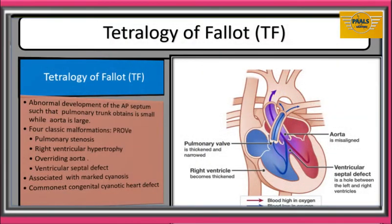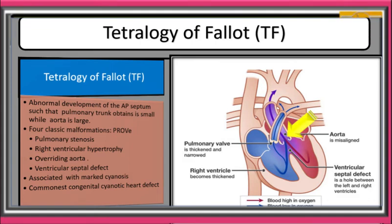Tetralogy of Fallot is an abnormal development of the aorticopulmonary septum such that the pulmonary trunk has an unusually small diameter while the aorta has an extraordinarily large diameter. Tetralogy of Fallot is characterized by four classic malformations. First: pulmonary stenosis, which is the narrowing of the pulmonary valve.